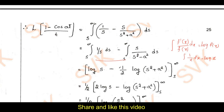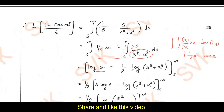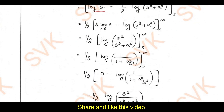The integral of 1/s is log s. For the second term, since the derivative of s² + a² is 2s, I multiply and divide by 2, giving (1/2)·log(s² + a²). Applying the laws of logarithms, the expression becomes log(s²) − log(s² + a²), which simplifies to log(s²/(s² + a²)), evaluated from s to ∞.